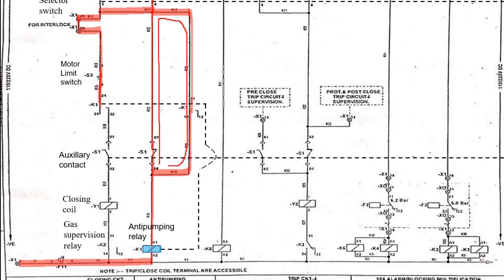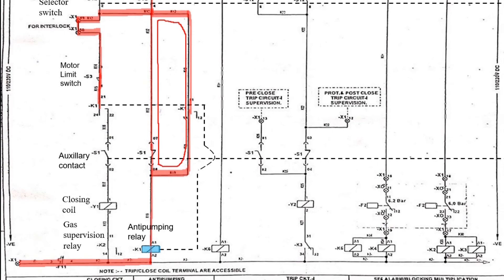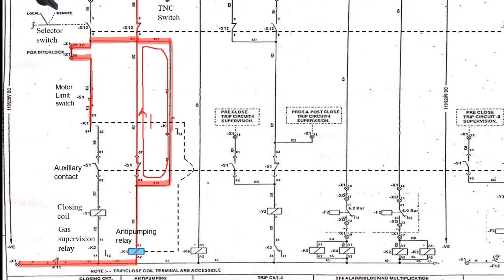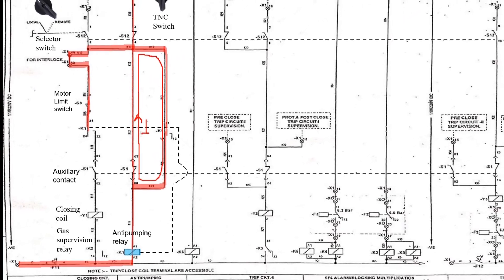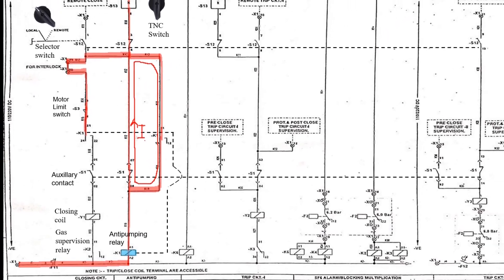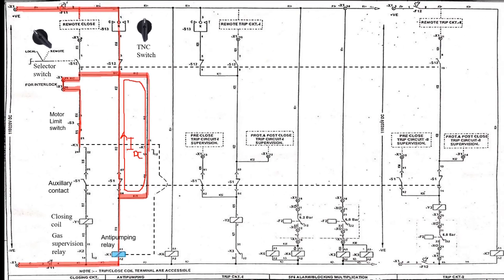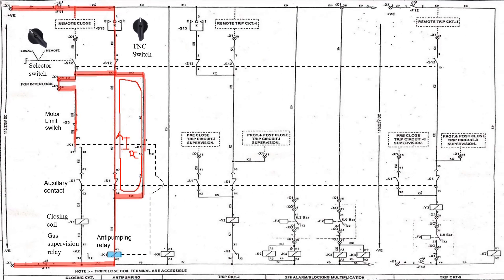This completes the closing circuit of a 66kV circuit breaker in local mode. In the next upcoming video, we will see how to read and understand the tripping circuit wiring diagram in remote mode.